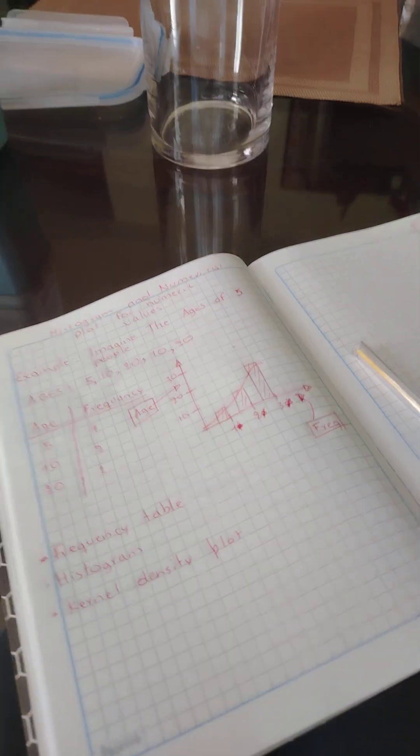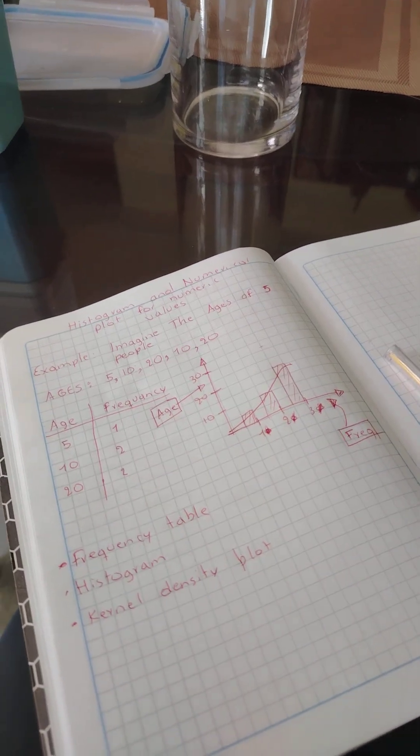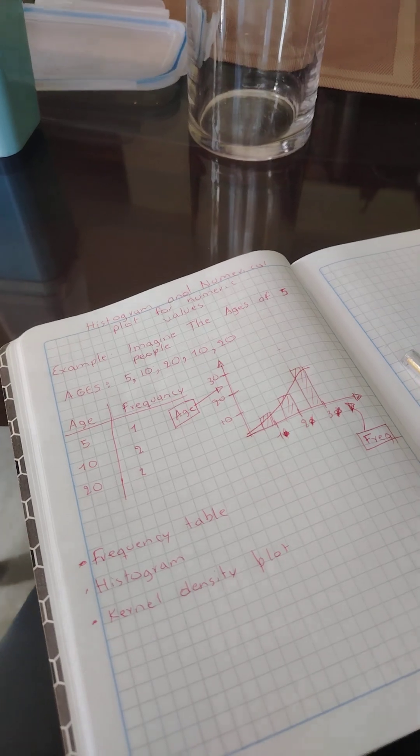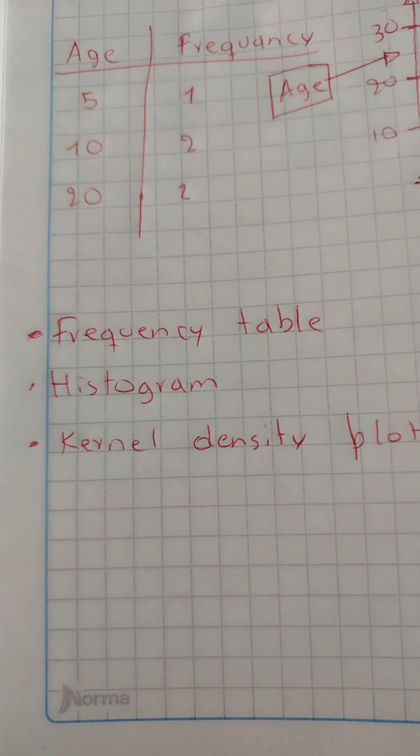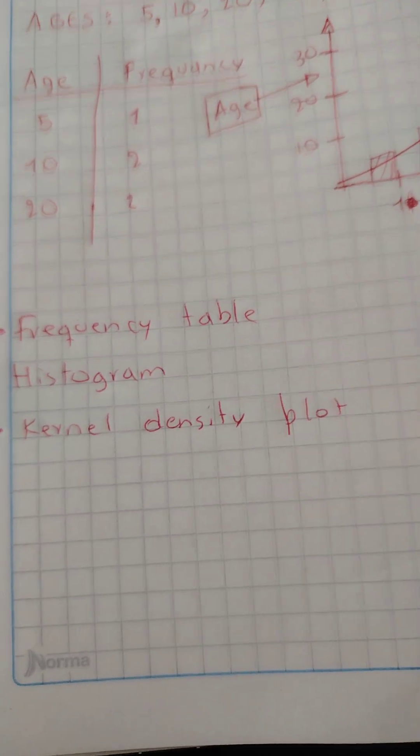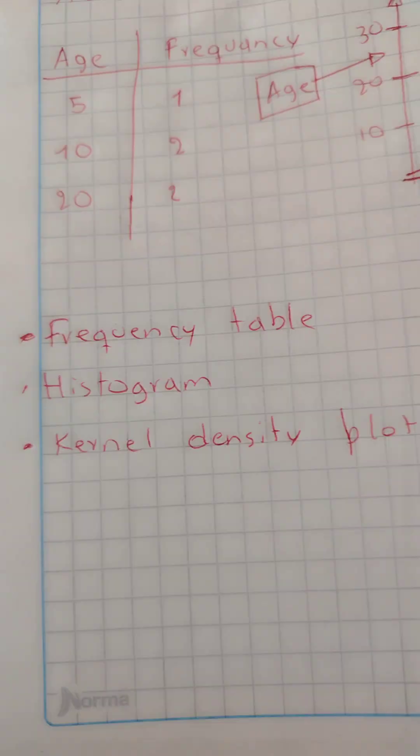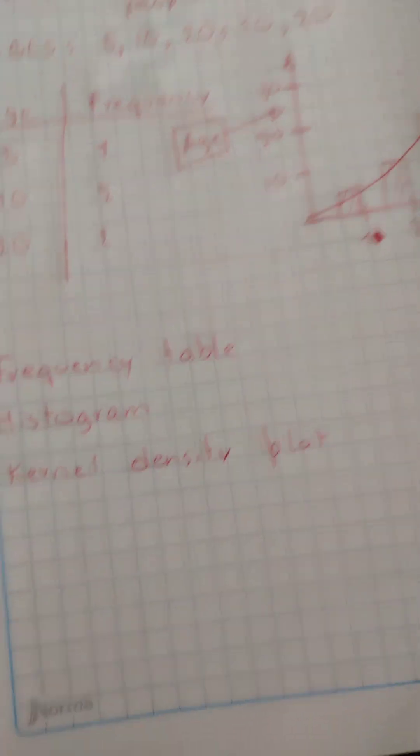This is the first topic I learned in my course of Introduction to Statistics. I have three topics to discuss today: Frequency Table, Histogram, and Kernel Density Plot. Those are the three main topics that I learned until this point.